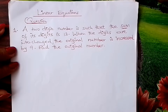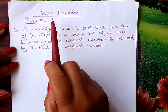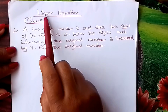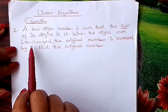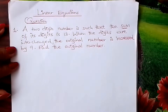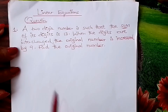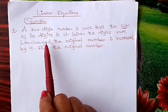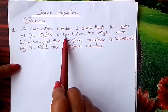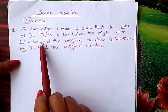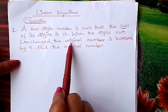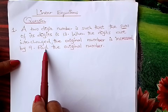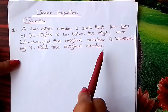Welcome learners to Form 1 mathematics. Today I would like us to look at a question to do with linear equations, Form 1. Let us go through it. A two-digit number is such that the sum of its digits is 13. When the digits are interchanged, the original number is increased by 9. Find the original number.